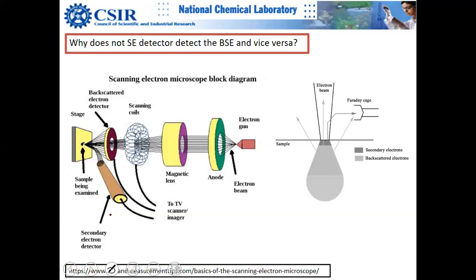There is no positive voltage on the backscattered detector because you want to catch those electrons with pure Z information — you want to know which atoms they interacted with. Scattering from gold atoms will be more than from copper or nickel.